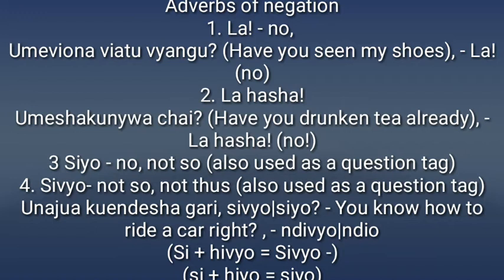Adverbs of negation: when you want to decline something, you can say 'la,' meaning 'no.' This one is quite harsh. Example: 'umevyona viatu vyangu?' — have you seen my shoes? 'La' — no. Or 'la hasha,' which is even harsher. Example: 'umesha kunywa chai?' — have you drunk tea already? 'La hasha' — no.